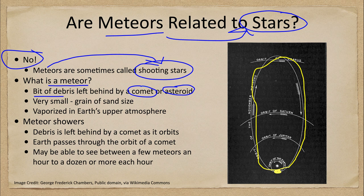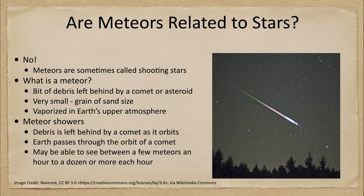However, in some cases we pass through their orbits once or even twice. And when we do, those very small grains of sand — essentially very small particles — can be vaporized in earth's upper atmosphere, and that gives us the meteor streaking across the sky as we see here.